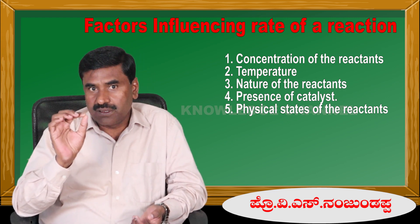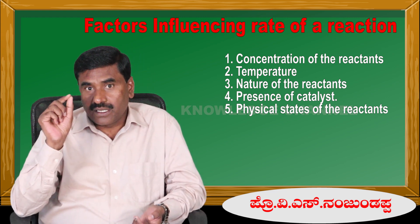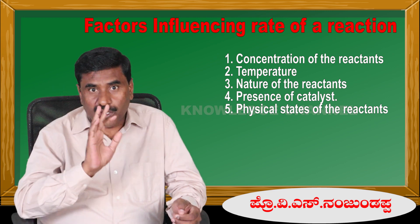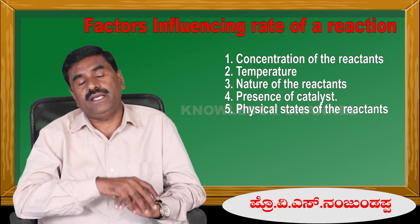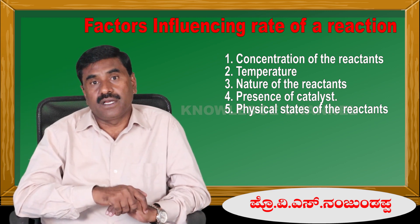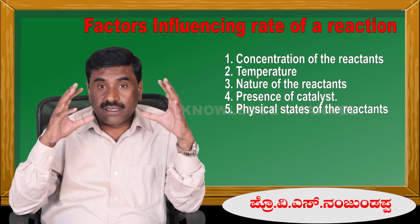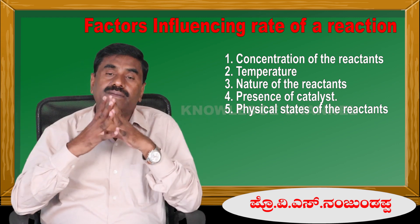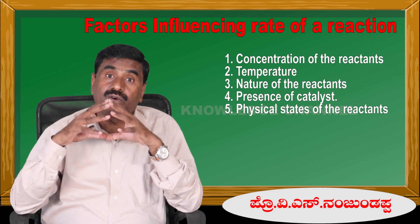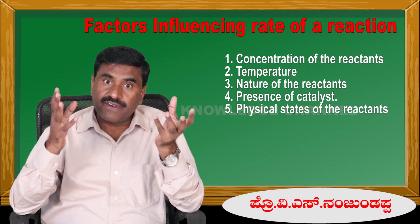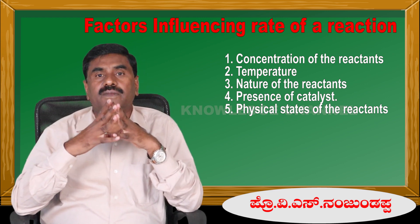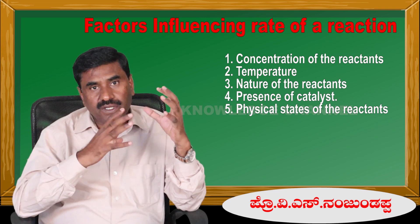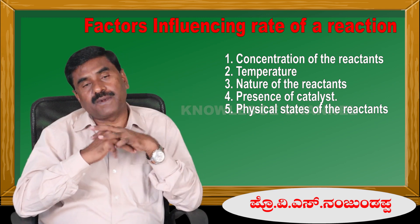The rate of a chemical reaction depends upon various factors. Number one: concentration of the reactants. Number two: temperature. Number three: nature of the reactants. Number four: presence of a catalyst. These are the factors which influence the reaction.